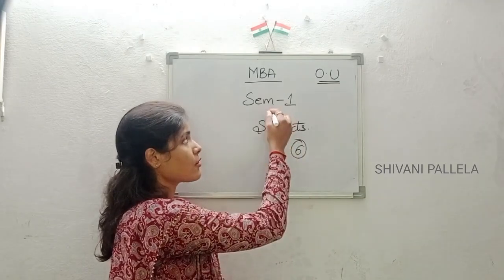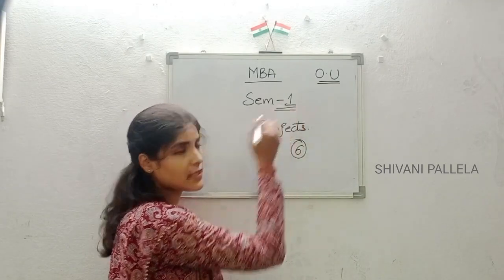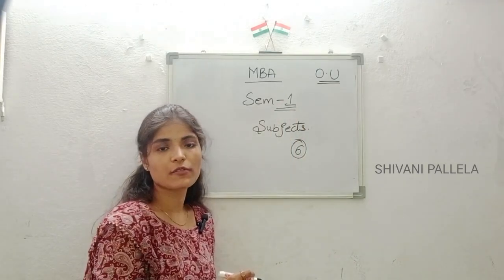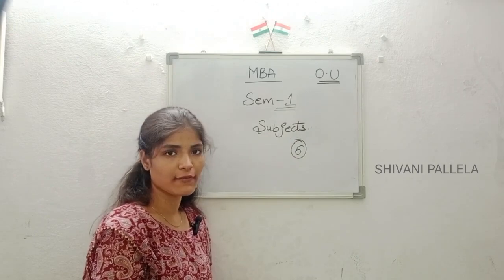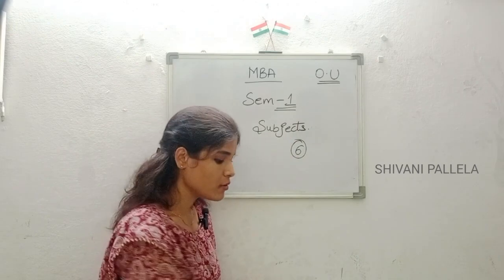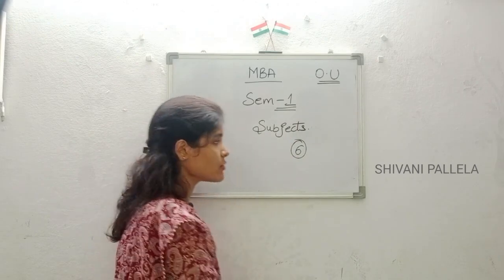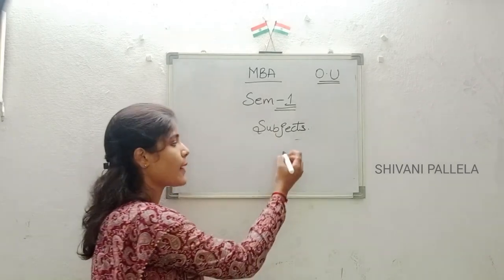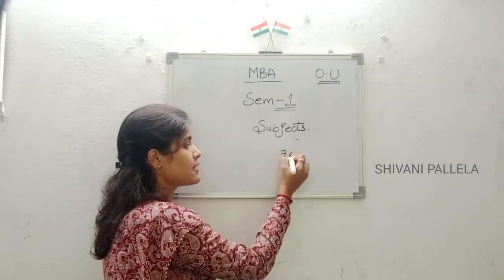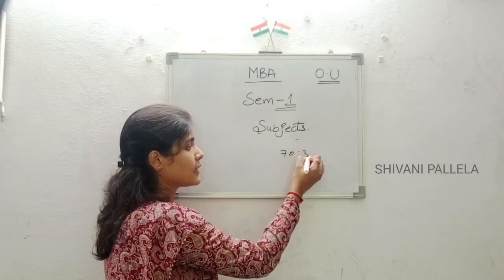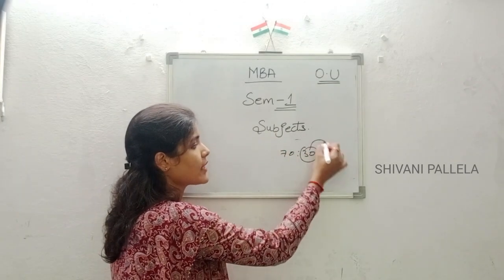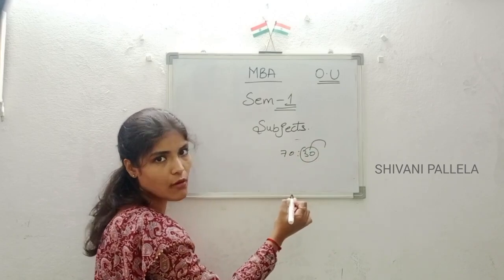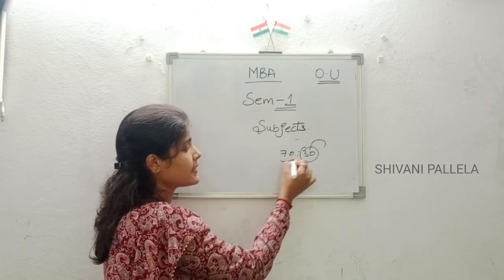Totally there are six subjects in semester one, coming in the academic year of 2023 to 2024. According to Osmania University, previously the question paper pattern was seventy marks provided by your colleges.